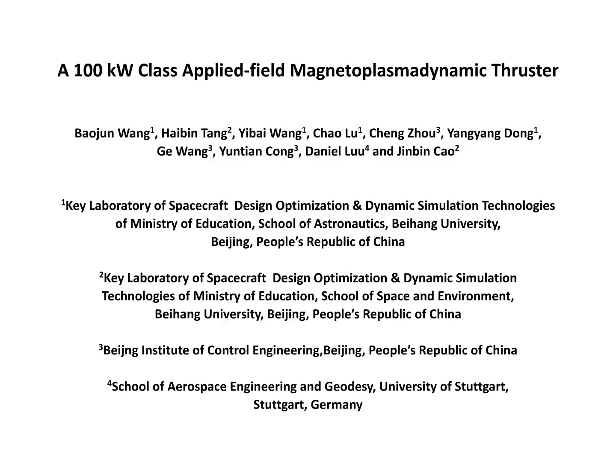The goal of this protocol is to introduce the design of a 100 kW class applied field magnetoplasma dynamic thruster and the relative experiment method. Magnetoplasma dynamic thruster, that is MPD thruster, is a typical electric accelerator. It is well known for high specific impulse and high thruster density, and it is treated as one of the primary candidates for the main propulsion in future high-power space missions.